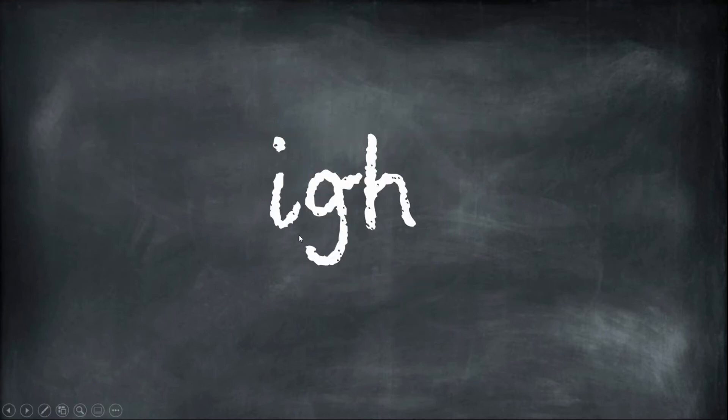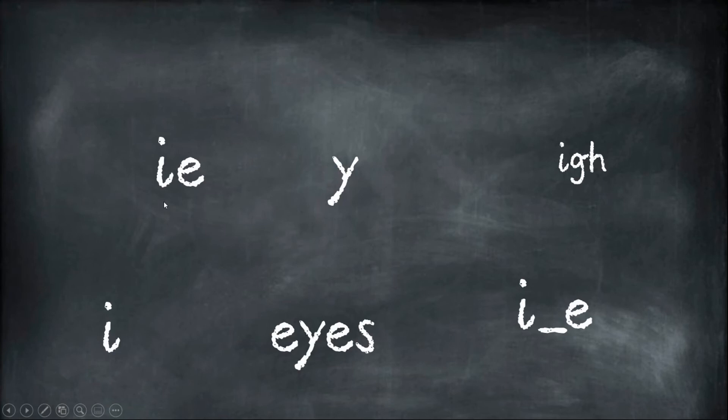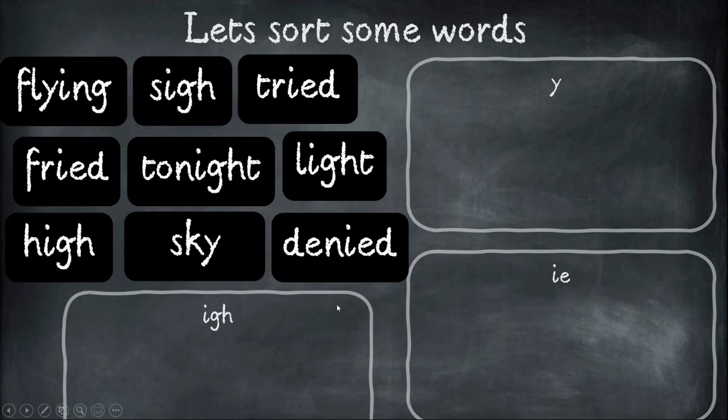This is the I grapheme. Today we're looking at all the different ways we can spell the I sound. Today we're going to focus on the top three where I is spelled either with a Y, IE, or IGH. Let's look at this first word.